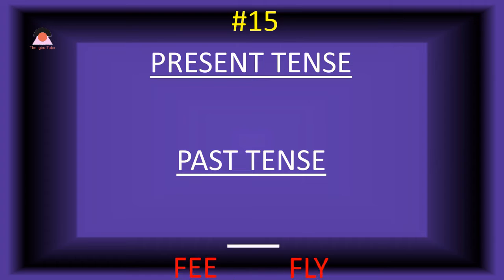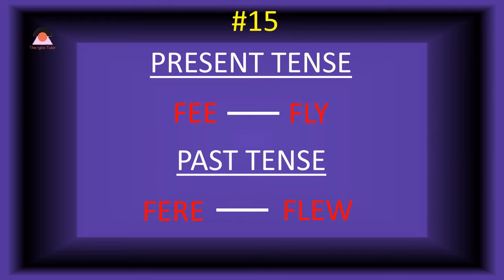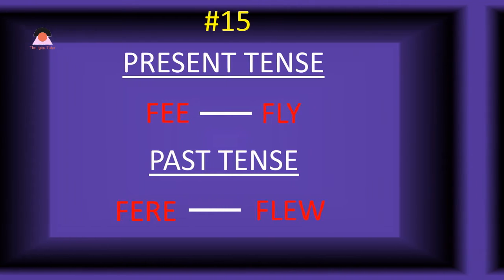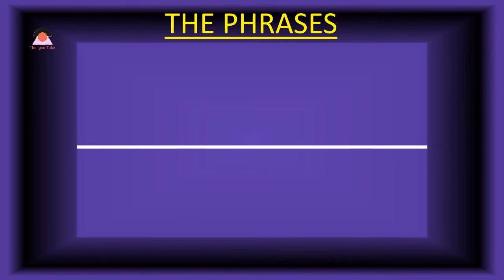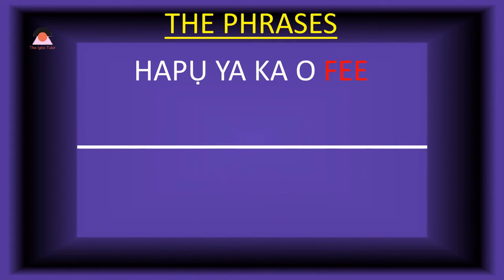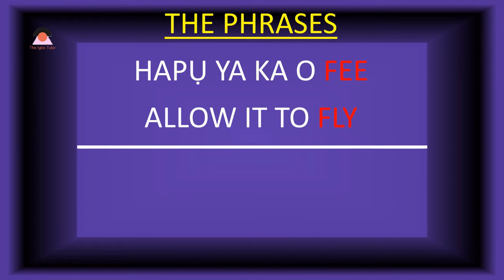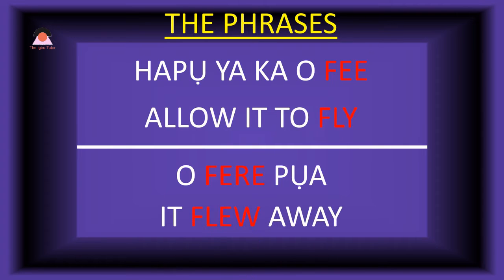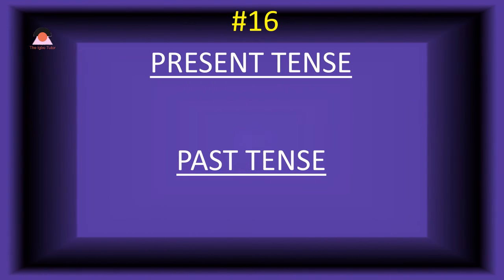Word number fifteen: 'fe,' which means 'fly.' The past tense of fe is 'fere,' meaning 'flew.' Present tense phrase: 'hapo ya ka o fe' — allow it to fly. Past tense: 'o-fere-po-ha' — it flew away.